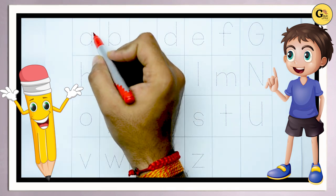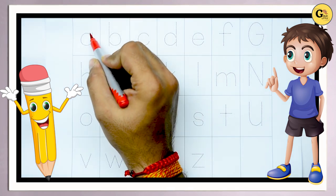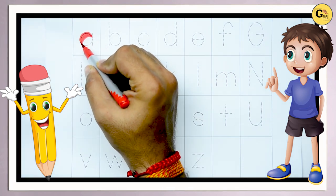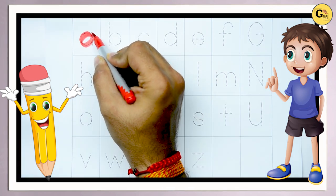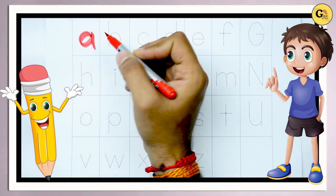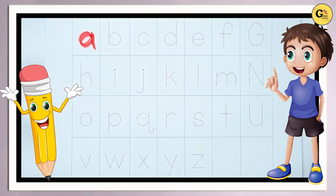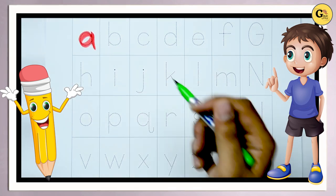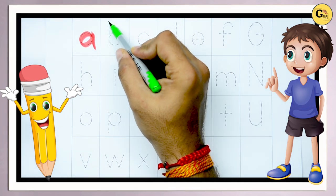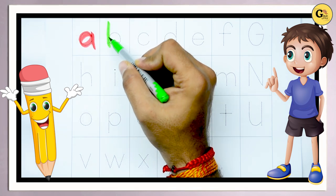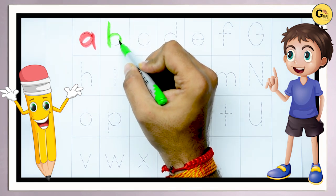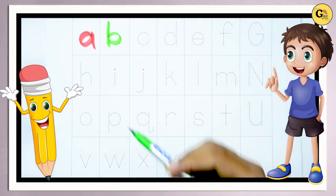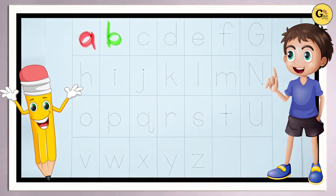A, small a with red color. It's A. B, B with green color. It's B, small b.